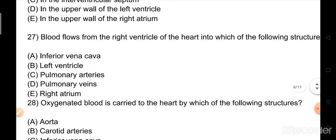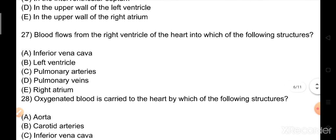Question number 27: Blood flows from the right ventricle of the heart into which of the following structures? Options: A) inferior vena cava, B) left ventricle, C) pulmonary arteries, D) pulmonary veins, E) right atrium. The right answer is option C, pulmonary arteries.